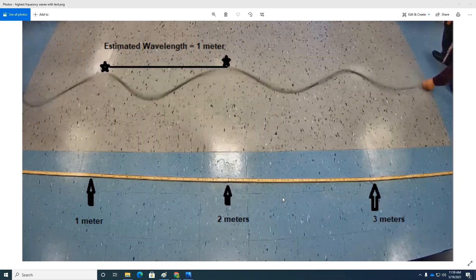Here we have our highest frequency wave. You can see three crests and four troughs visible, and the estimated wavelength was around one meter.